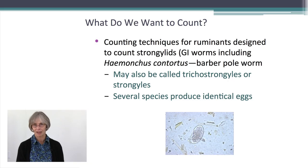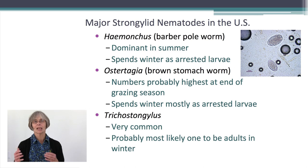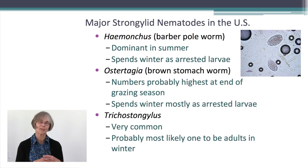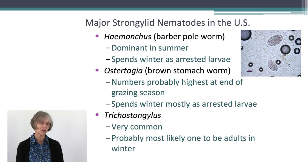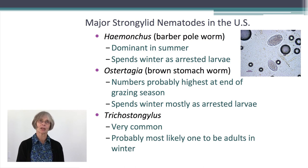The principal parasite within this group is barber pole worm, which is the primary worm parasite certainly east of the Rockies. This is a parasite that tends to be dominant in the summer grazing season and will spend the wintertime as rested larvae. This trichostrongyle or strongyle group also includes the brown stomach worm Ostertagia (also called Teladorsagia), which you might see more often in winter or late fall, and trichostrongylus, a very common worm. But Haemonchus is our primary worm in the summer grazing season and the parasite of greatest concern.